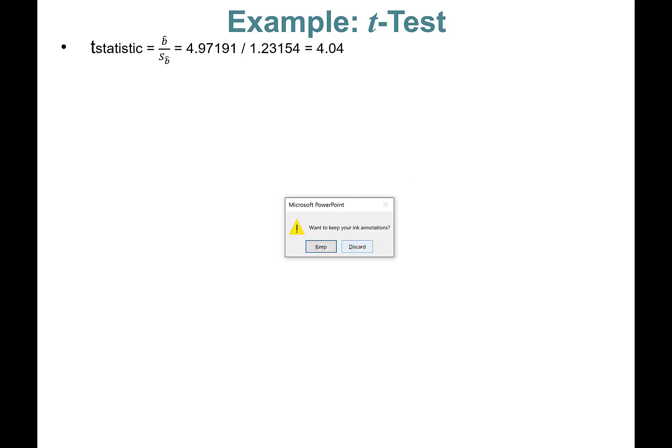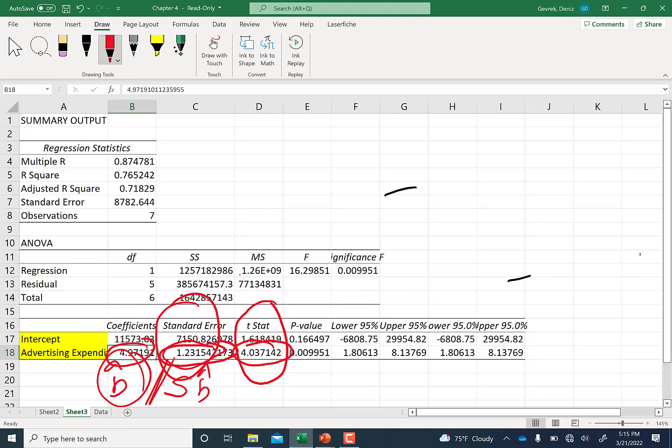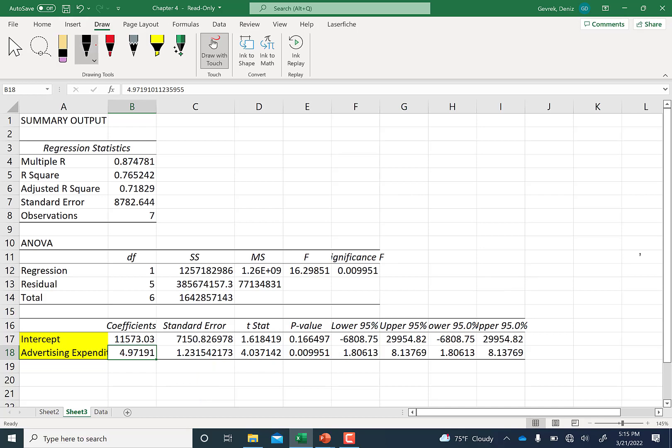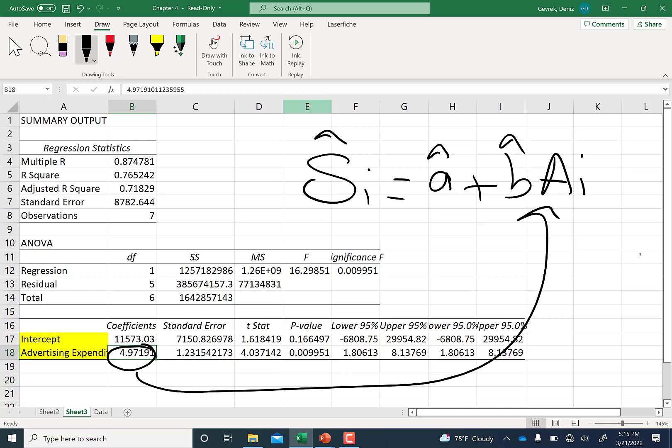Here's an example. For this specific example that we have been working on—advertising—remember this example we worked on? It was the regression of sales on advertisement spending. So beta hat is this, and my standard error of beta hat is going to be 1.23. So 4.97 divided by 1.23.